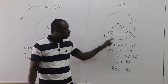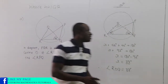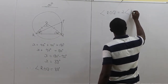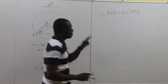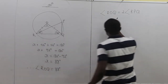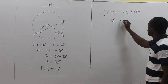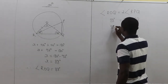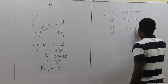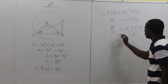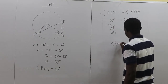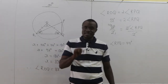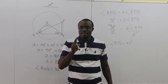We know the angle a chord makes at the center is twice the angle it makes at the circumference. So angle ROQ = 2 × angle RPQ. ROQ is 88 degrees, so 88 = 2 × angle RPQ. Dividing both sides by 2, angle RPQ = 44 degrees. That's very easy.